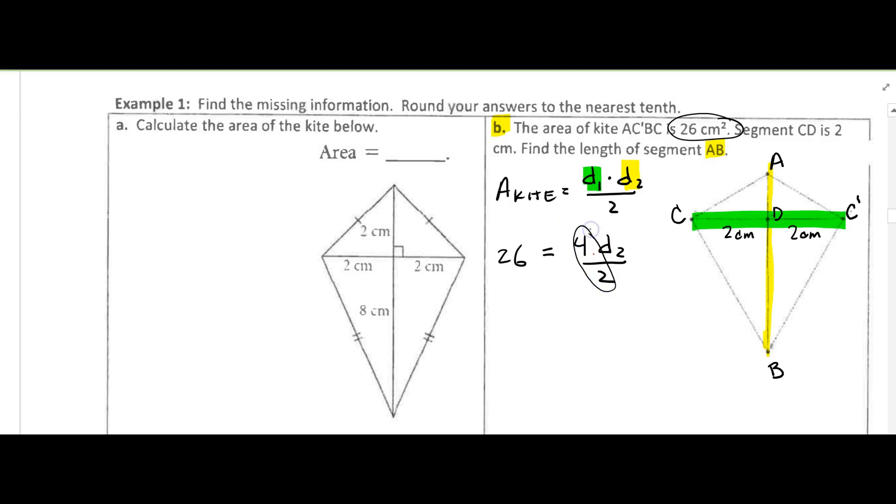So 26 is equal to 2D2. We'll divide both sides by 2 and I end up with the second diagonal, which is segment AB, is 13 centimeters.